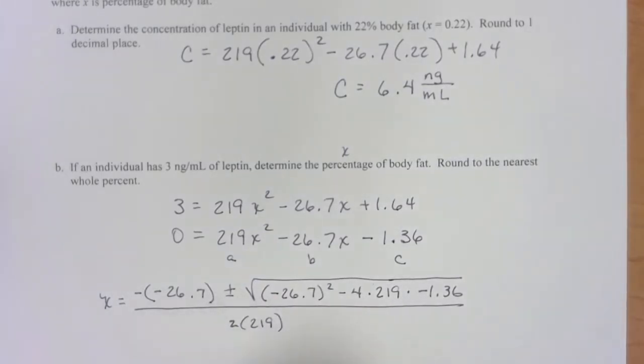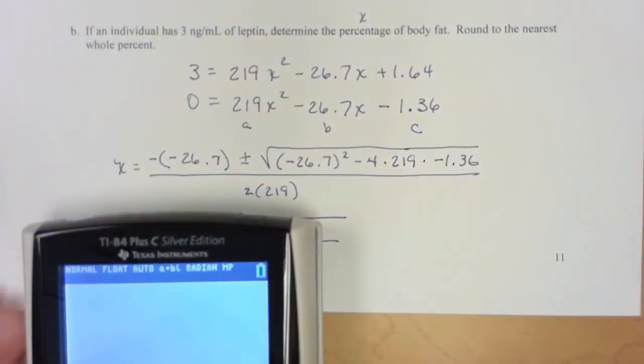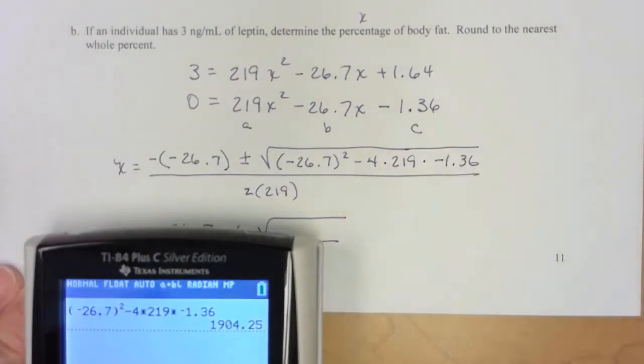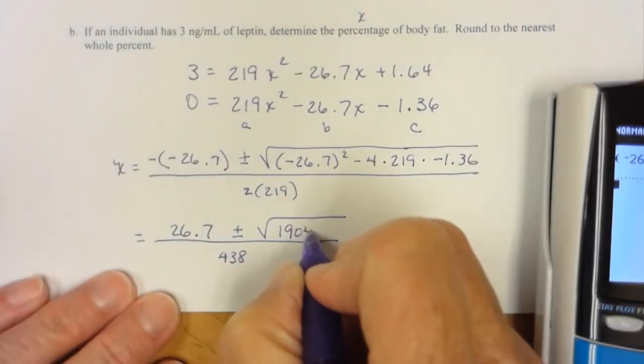So let me clean this up a bit. See, that would give me what, 438. Let's go see what this number is. So in parentheses, negative 26.7 squared minus 4 times 2.19 times negative 1.36. So under is 1904.25.